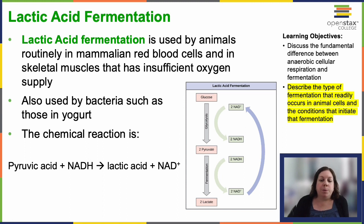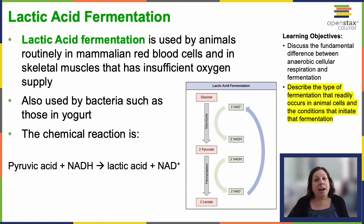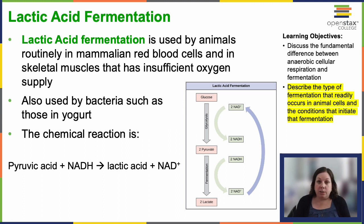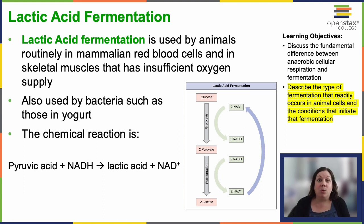The enzyme responsible for this lactic acid fermentation reaction is called lactate dehydrogenase. While the reaction can occur in both directions, acidic conditions inhibit the left-to-right reaction, so you get this accumulation of lactic acid. Once the lactic acid is transported to the liver, it gets converted back into pyruvic acid, and now we can use it to start making more energy.